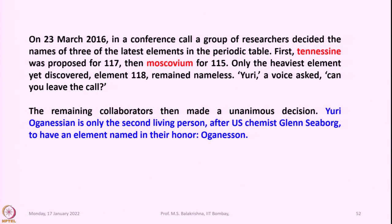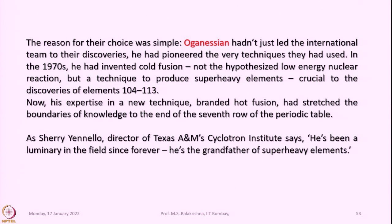Uri Oganessian became only the second living person after US chemist Glenn Seaborg to have an element named in their honor — Oganesson. Oganessian had not just led the international team to their discoveries; he had pioneered the very techniques they used.